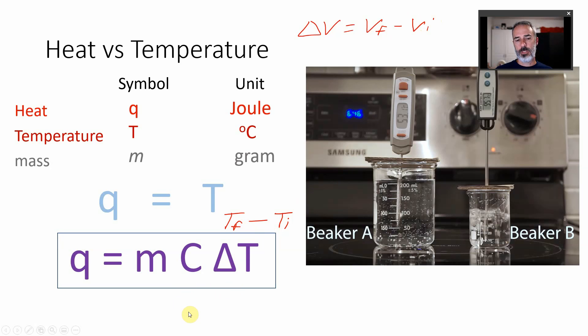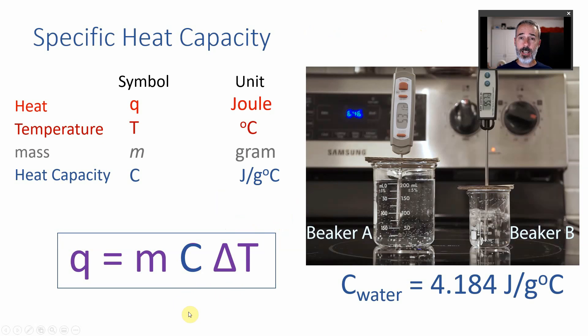What's C though? Let's get to what C is. Well C is a constant and if we're using water then that value is always going to be 4.184 joules per gram degree Celsius.